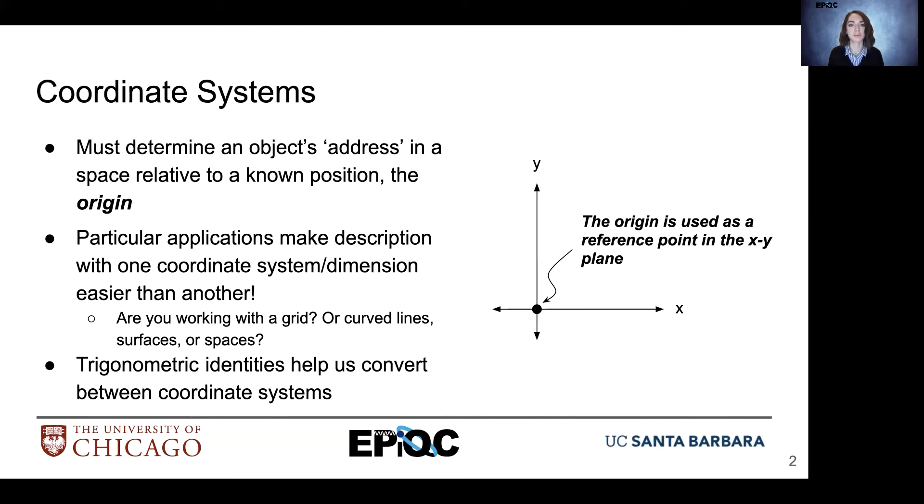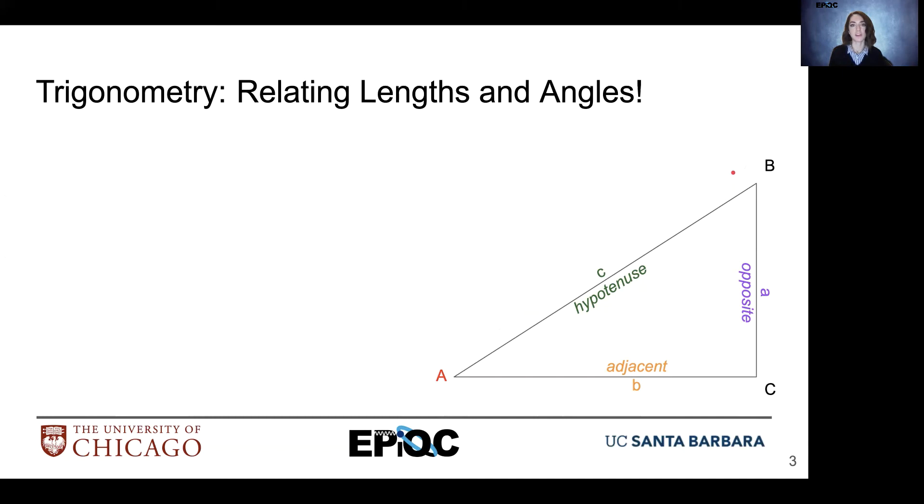We can use trigonometry to help us move between coordinate systems. So trigonometry helps us relate lengths and angles. We have our angles represented by capital letters, so A, B, and C. And then the sides of the triangle, so here we have a right triangle, the sides are represented by lowercase values, so A, B, and C as well, for opposite adjacent hypotenuse respectively.